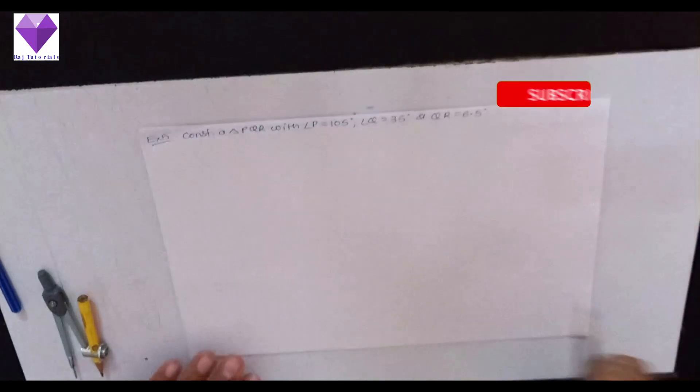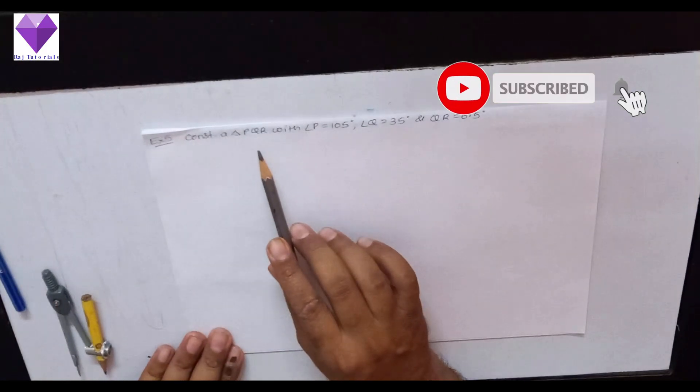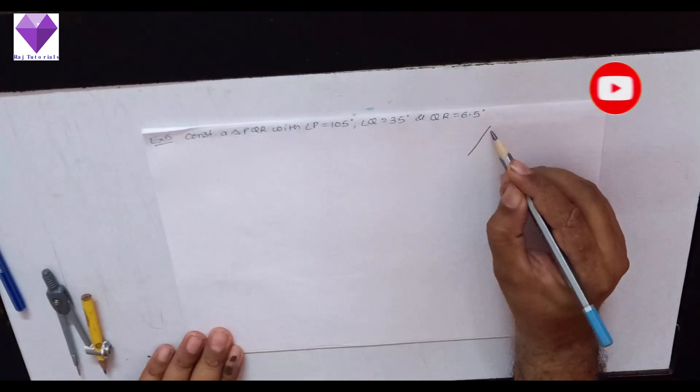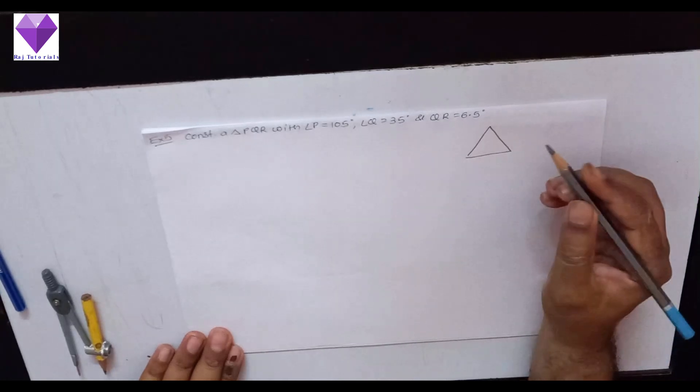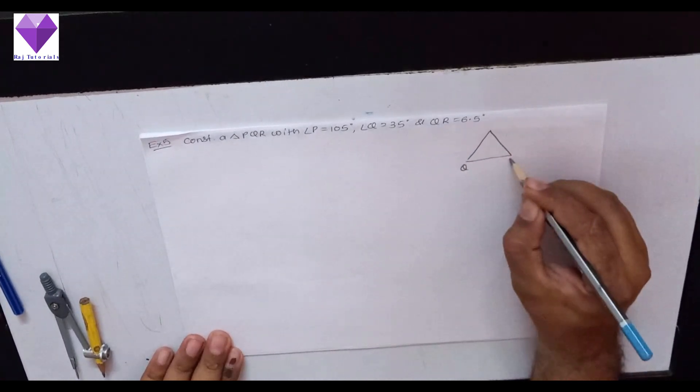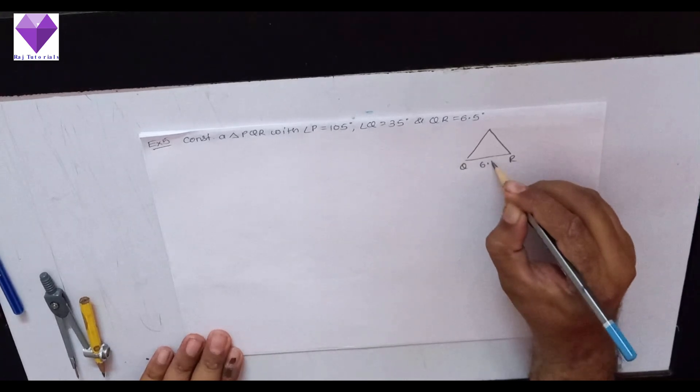Hello students, today we are going to construct a triangle PQR with angle P equal to 105 degrees, angle Q equal to 35 degrees, and QR equal to 6.5 cm.